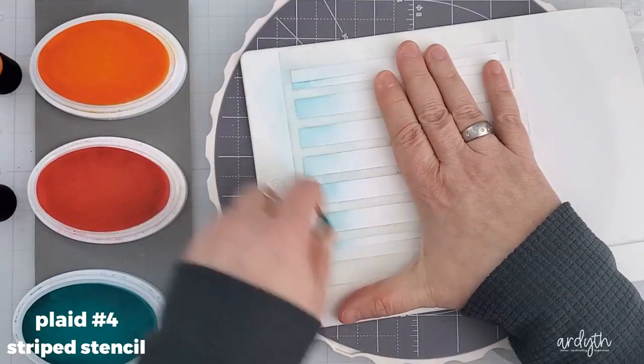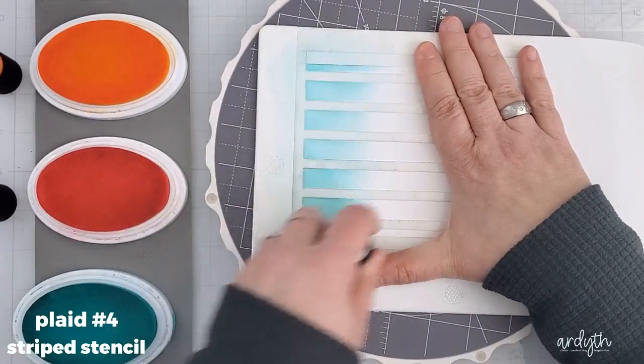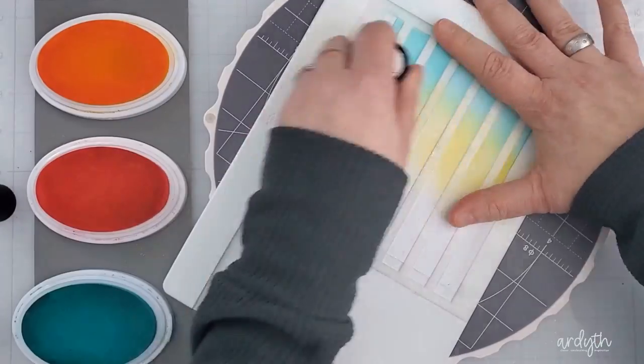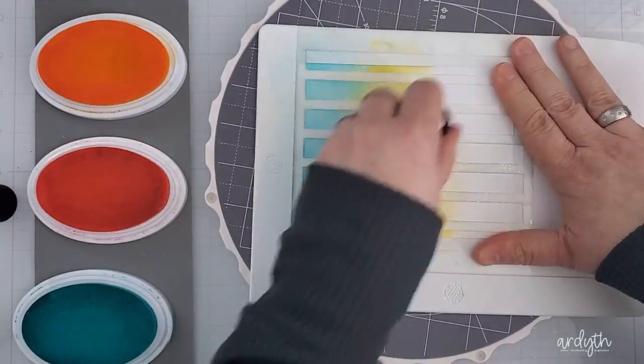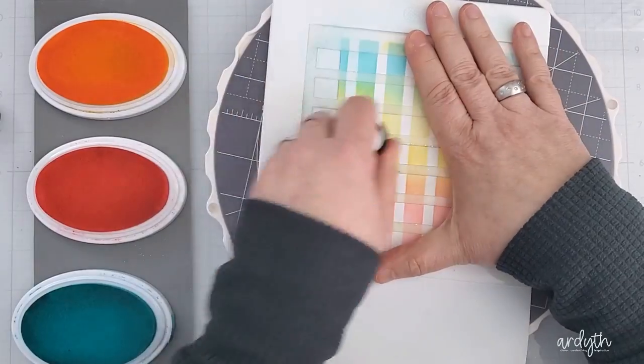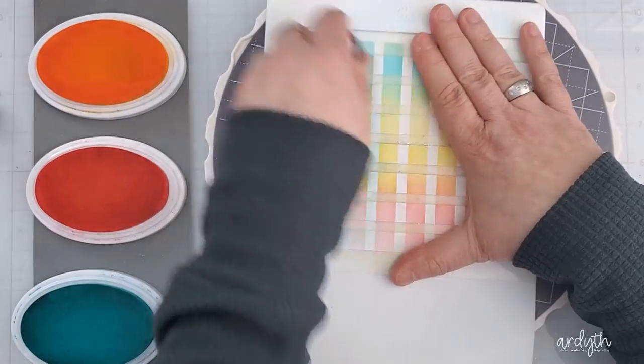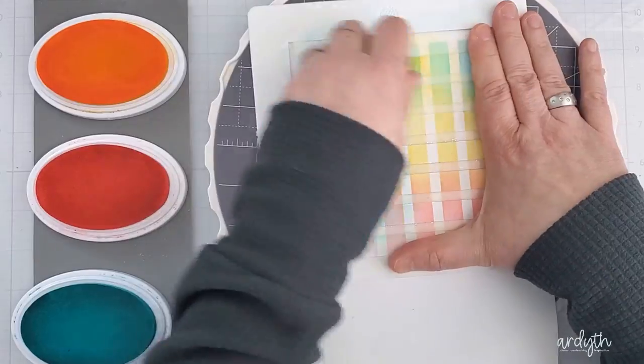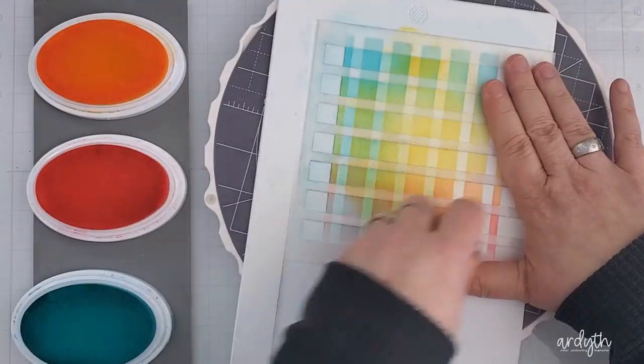Plaid number four is to use a striped stencil like this one from Birch Press Design. This one's retired, but there's a lot of striped stencils available, and all you have to do is blend your ink through one way and then turn the stencil and blend it the other way. Now because all the stripes are the same size, you could really call this one gingham, but I think gingham is just a specific type of plaid, usually a single color, so that's another change.